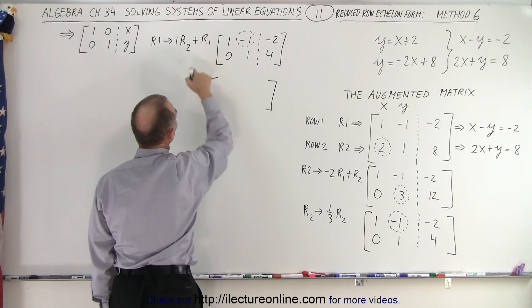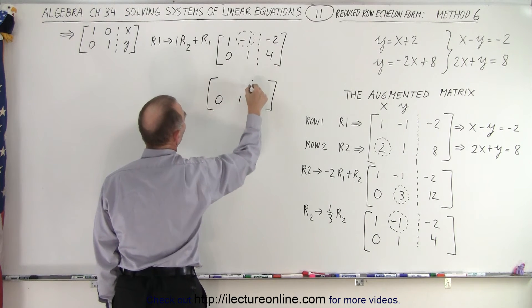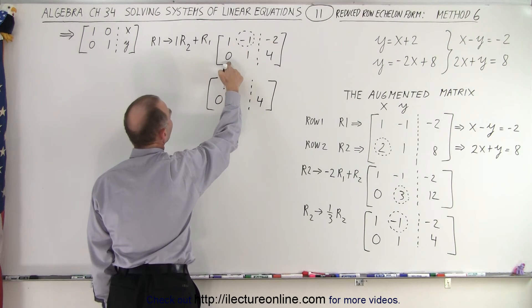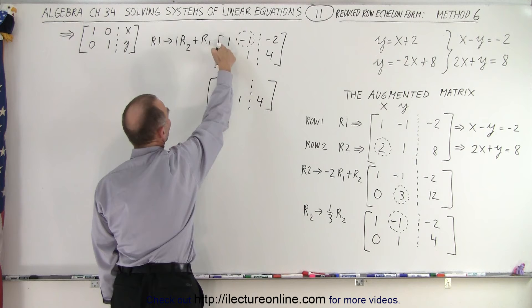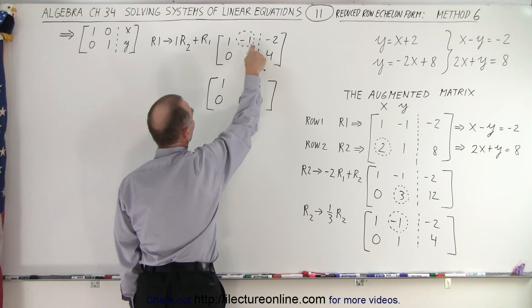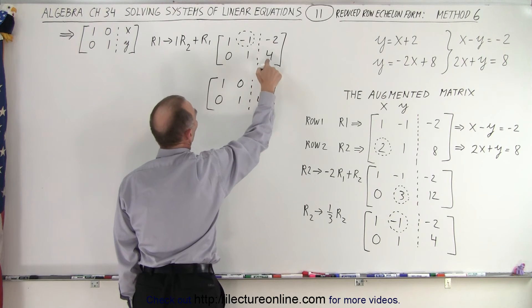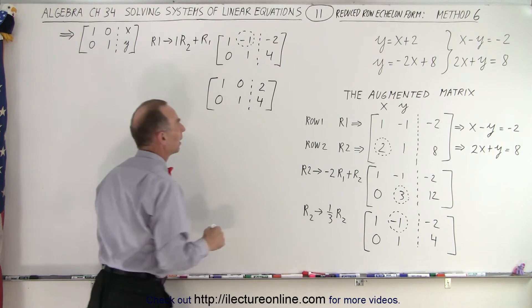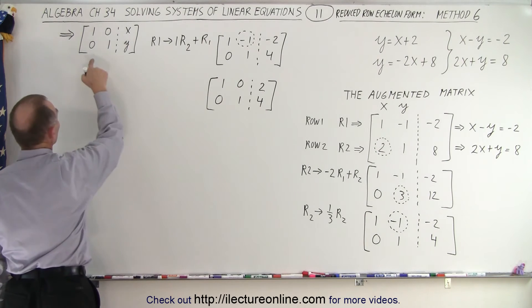This becomes as follows. Notice that row 2 doesn't change, so we get 0, 1, and 4. And here, 1 times 0 added to 1 still gives me 1. 1 times 1 is 1, added to negative 1 gives me 0. And 1 times 4 added to negative 2 gives me positive 2. Notice I now have it in this exact form.